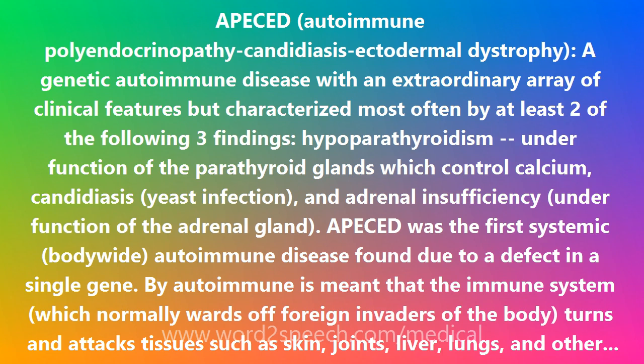Other features of APESD are total baldness (alopecia totalis), inflammation of the cornea and whites of the eye (keratoconjunctivitis), underdevelopment (hypoplasia) of the enamel of the teeth, childhood onset moniliasis (yeast infection), juvenile onset pernicious anemia, gastrointestinal problems including malabsorption and diarrhea, and chronic active hepatitis.